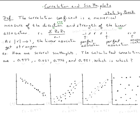And the strength — how do we know the strength? The closest the absolute value of r is to one, the strongest the linear association. And again, if it's not linear, you cannot talk about correlation.